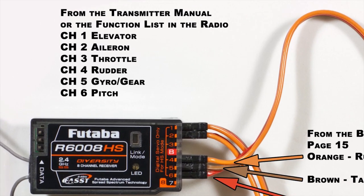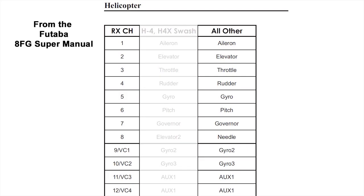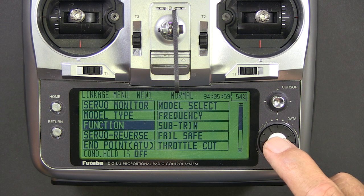Go ahead and hook them up as shown here, but the main concern is the channel assignments, which you can find in your manual or on your radio in the function list. Most of the Futaba radios have this.